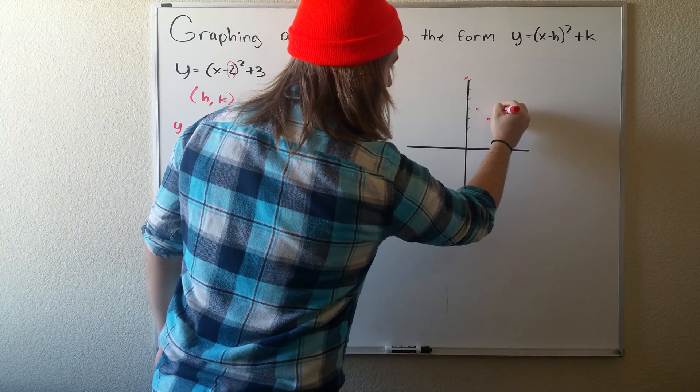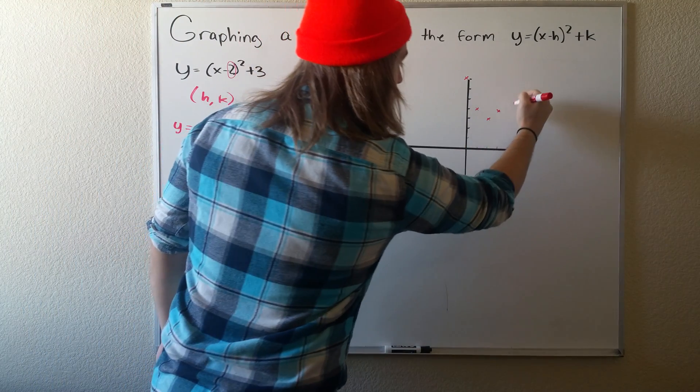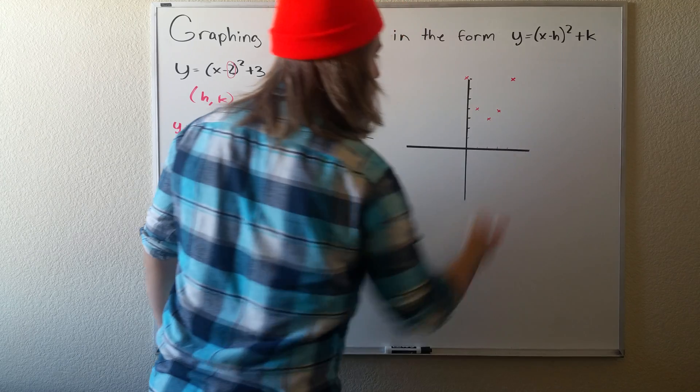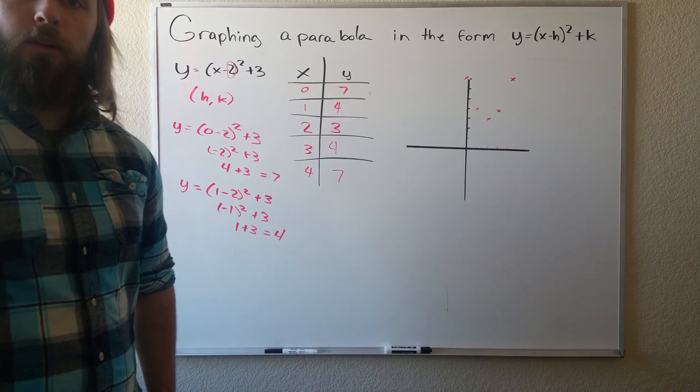So if we plot those, we know we're at 3, 4, and 4, 7. So there's our five points.